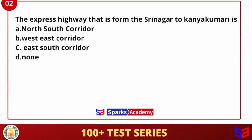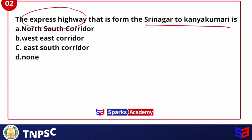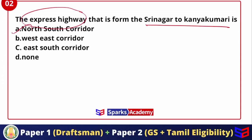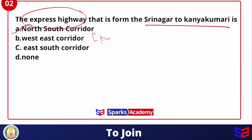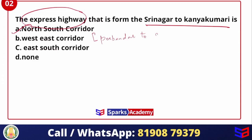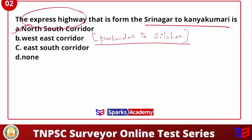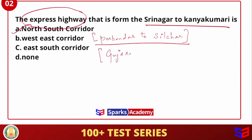The express highway connecting Srinagar to Kanyakumari — so Srinagar and Kanyakumari are connected by an express highway. The options are: North-South Corridor, West-East Corridor, East-South Corridor. The answer is North-South Corridor. The West-East Corridor connects Porbandar in Gujarat to Silchar in Assam.